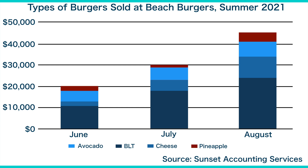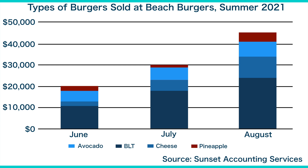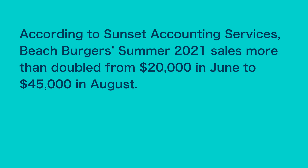The Pineapple Burger, on the other hand, is not as popular. Now it's time to share what you have found with the owner of Beach Burgers. First, you should start off with a general explanation of the stacked column chart. According to Sunset Accounting Services, Beach Burgers Summer 2021 sales more than doubled from $20,000 in June to $45,000 in August.